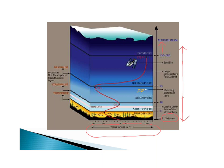Each one of these layers is capped by something called a pause. The troposphere is capped by the tropopause, the stratosphere by the stratopause, and the mesosphere by the mesopause. Because the thermosphere and exosphere blend into each other and the exosphere blends into outer space, they don't have those same caps. That's not super important for APES, but you may see that terminology on the exam.